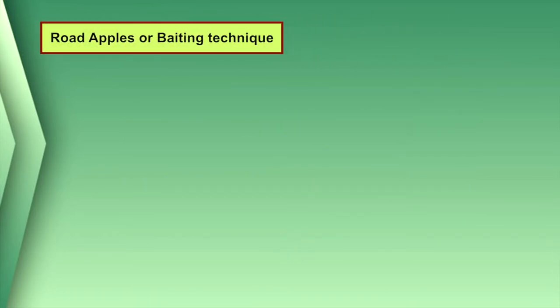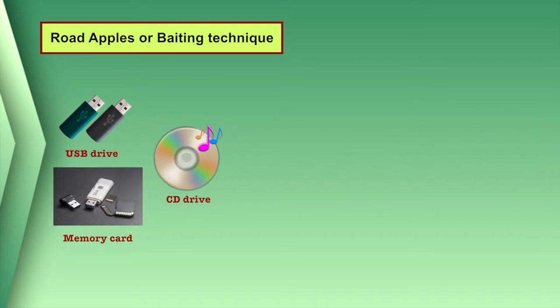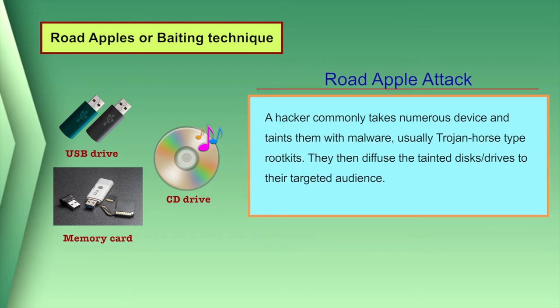Another technique is road apples or baiting. A road apple is a physical object, usually a storage device such as a USB drive, a memory card, or CD, that a social engineer leaves in the vicinity of a target organization. The hope is that one of the organization's staff members will pick it up and plug it into a computer, unknowingly running a malicious program — or, in an ethical test, a benign program that might redirect the user to a training and awareness website.